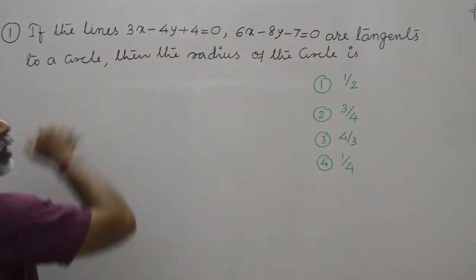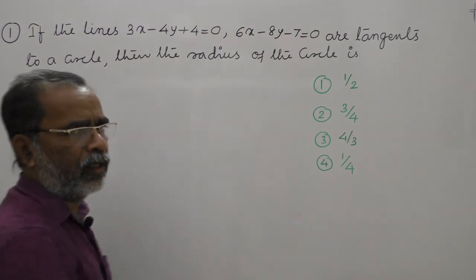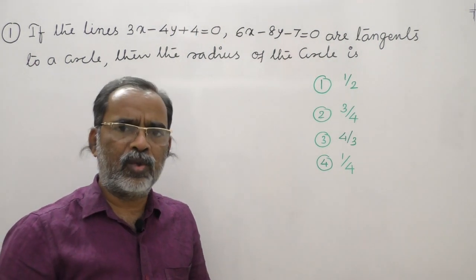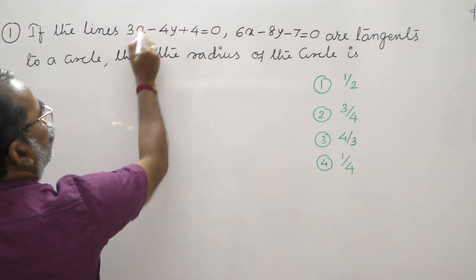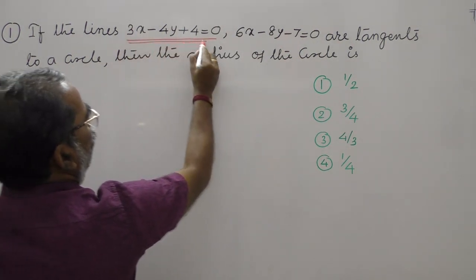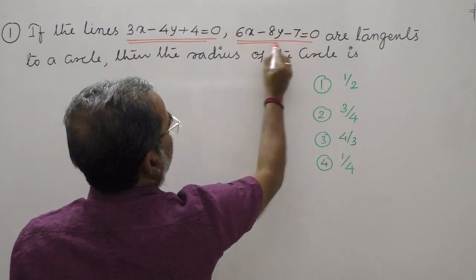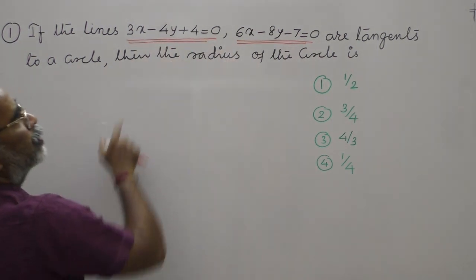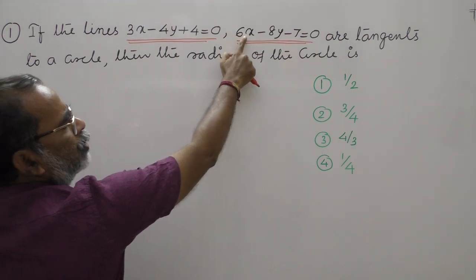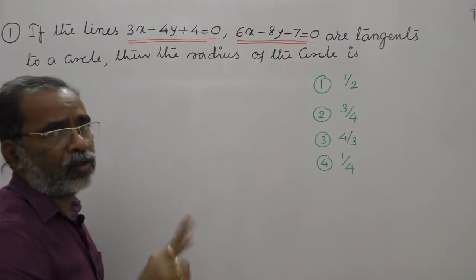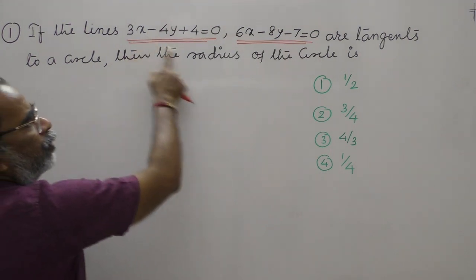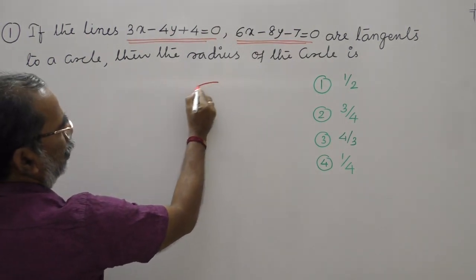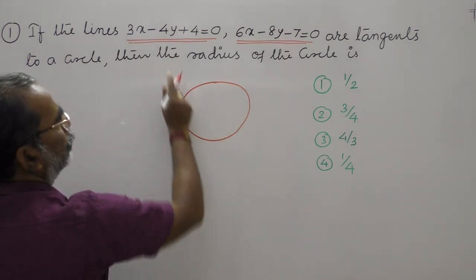If the two lines are tangents to a circle, then what is the radius of the circle? These are the options. The two lines are given as tangents to a circle. By watching the equations of these two lines, they are parallel lines. If you take two common, this is also three x minus four y. Slopes are equal — slope is three by four, also six by eight, which is nothing but three by four.